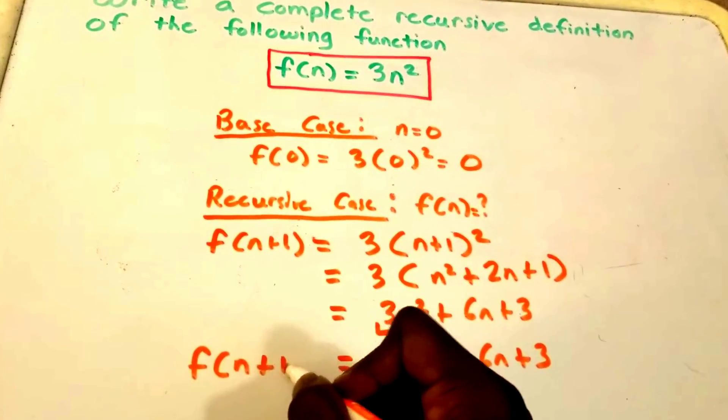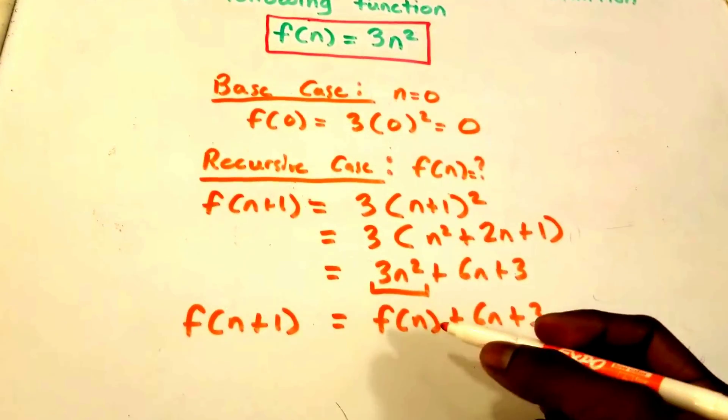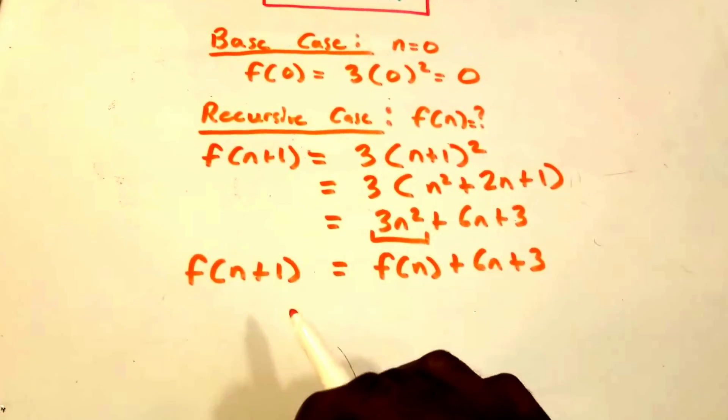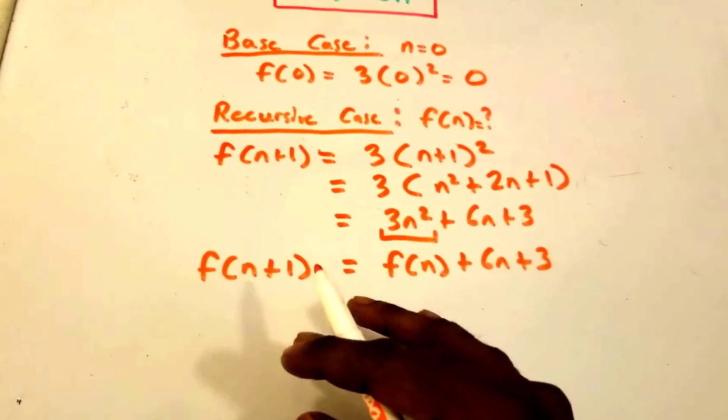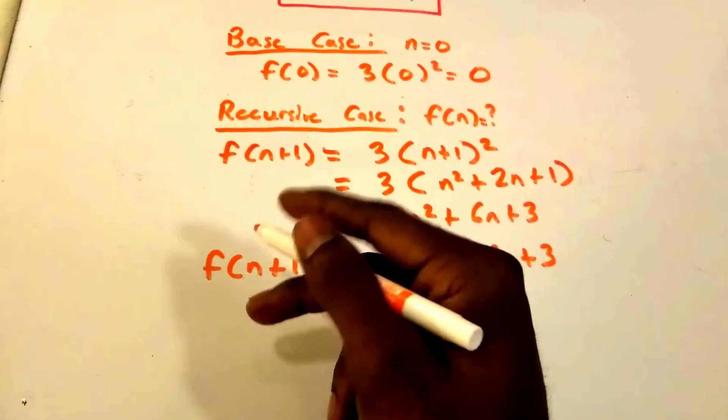So now what we want to do is we want to get that f(n) on the left hand side, and there's many different ways we can do this.